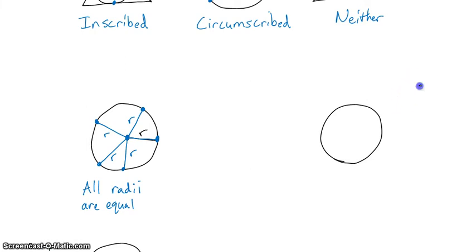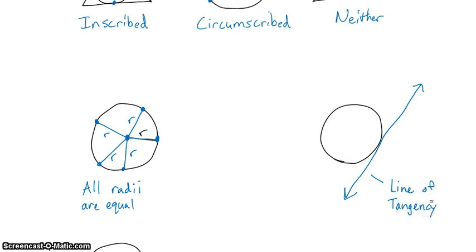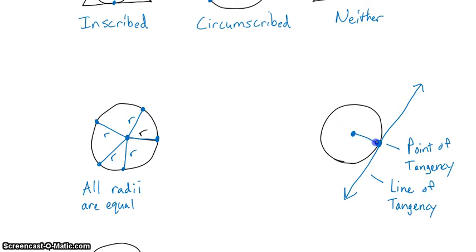The third property involves a line of tangency. A line of tangency will touch the circle exactly once, at the point of tangency. If we draw in the radius from the center of the circle to the point of tangency, that radius and the line of tangency will be perpendicular to each other — they will form a right angle. That is Theorem 10.1.